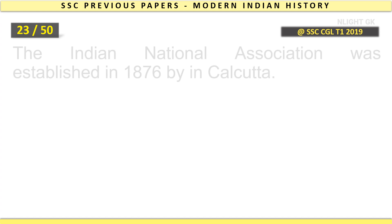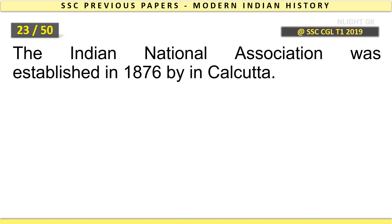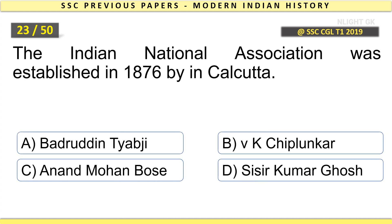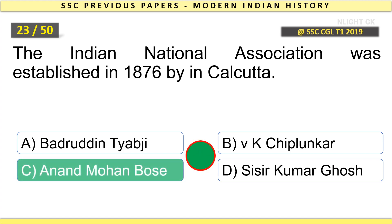The Indian National Association was established in 1876 by whom in Calcutta? Anand Mohan Bose.